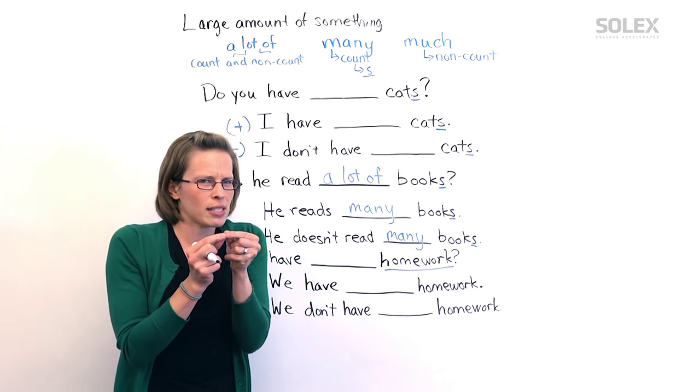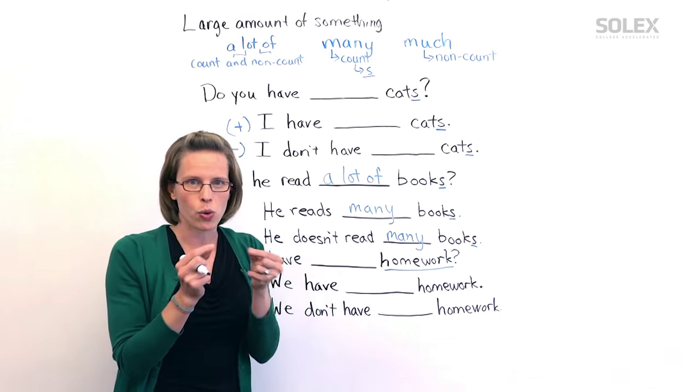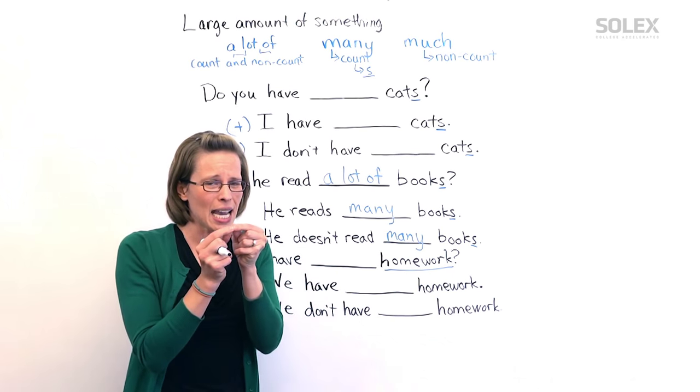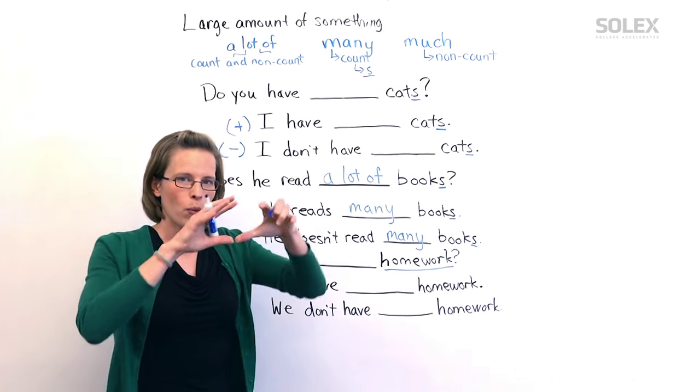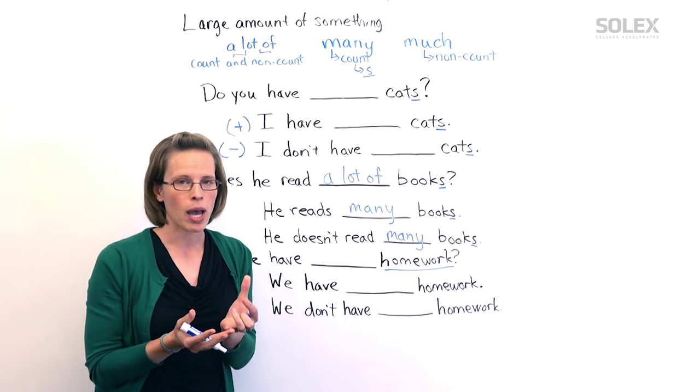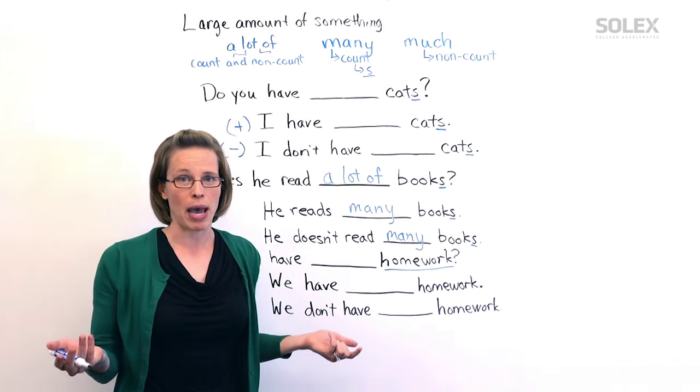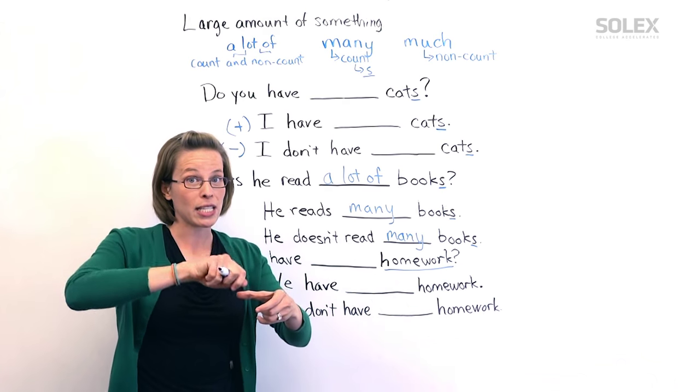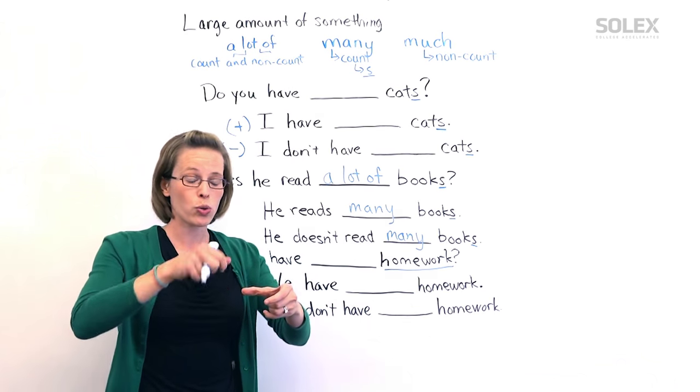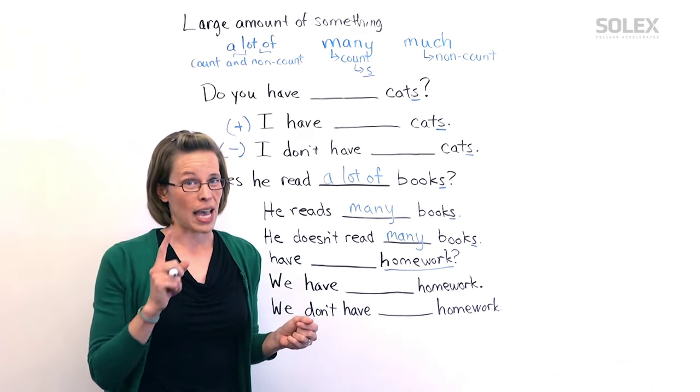Also, really small things like sugar or salt or rice that are so teeny tiny, we don't count them. We talk about them as a group. I don't put sugars in my coffee. I put sugar in my coffee, but I put a spoon of sugar or two spoons of sugar. That's different.